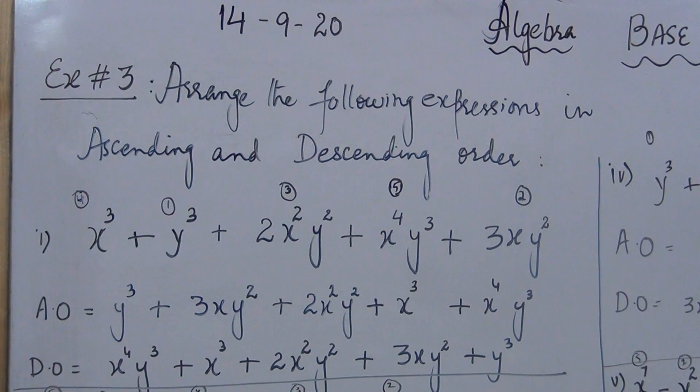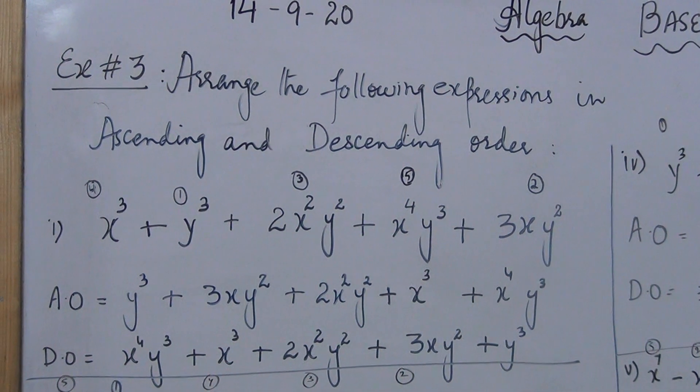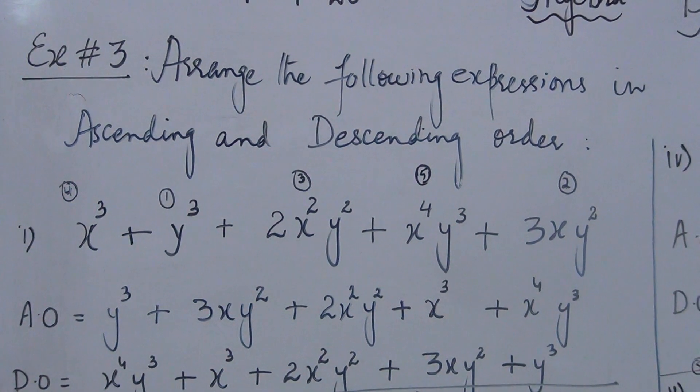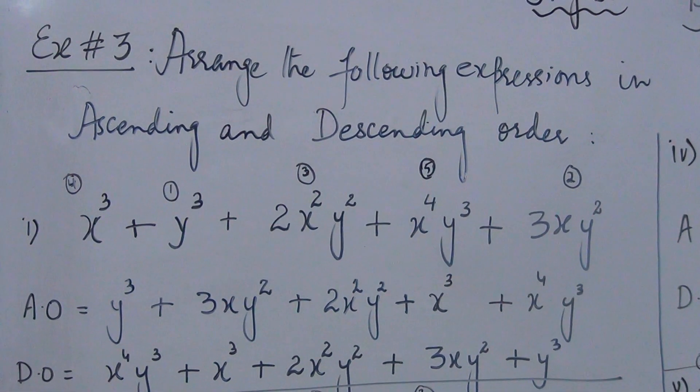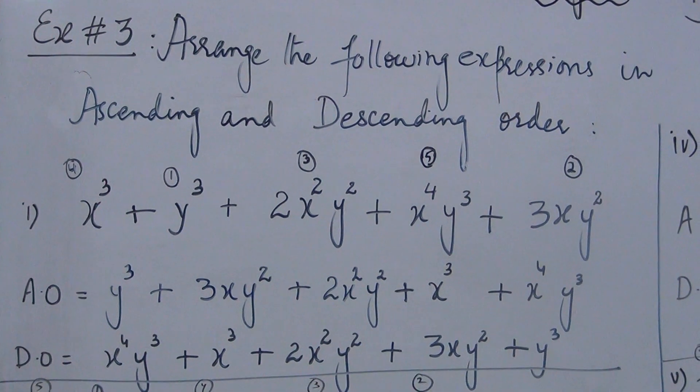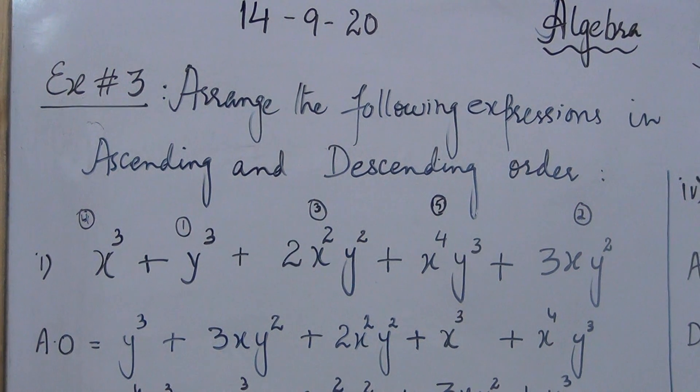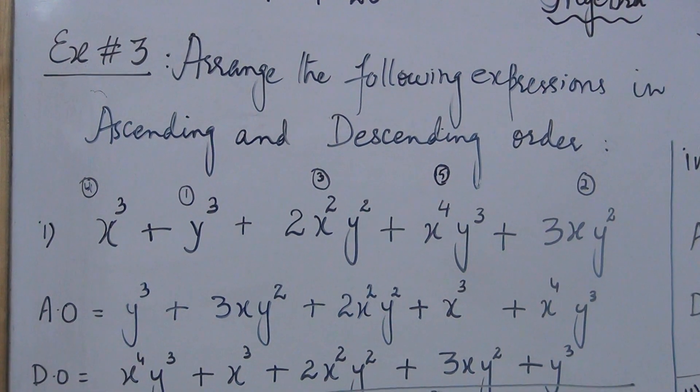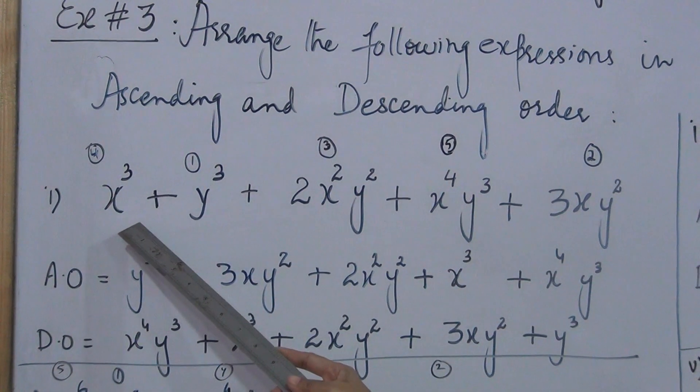The exercise is arrange the following expressions in ascending and descending order. We have already done arrangement in exercise 2 as well, but the difference is in exercise 2 there was only one variable. Now you can see there are two variables in the expression.